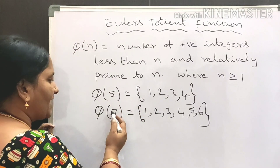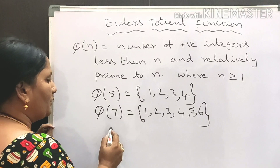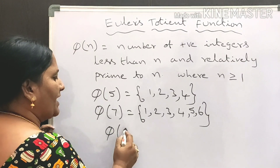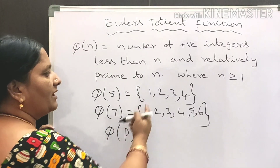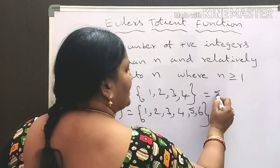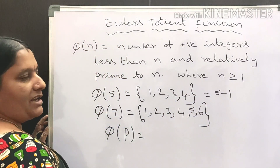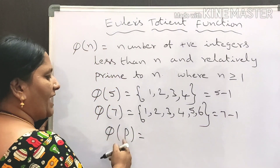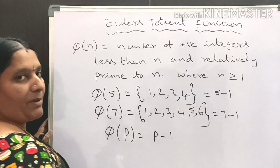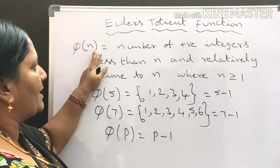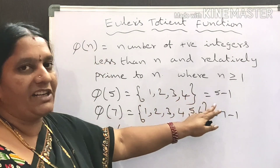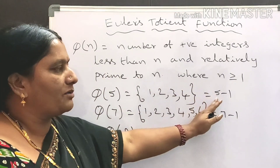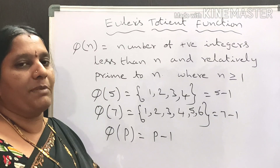From this we can understand: 5 is a prime number and 7 is a prime number. So the Euler-Totient function for prime numbers gives phi of 5 as 5 minus 1, and phi of 7 as 7 minus 1. Therefore, phi of P is equal to P minus 1 if the given number is a prime number.